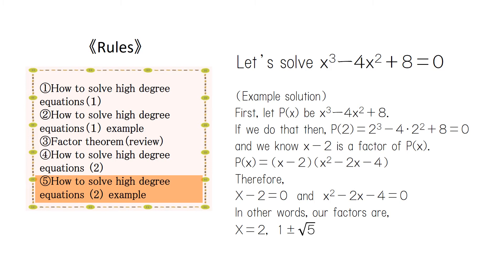Therefore, x minus two equals zero and x squared minus two x minus four equals zero. In other words, x equals two and one plus or minus square root of five.